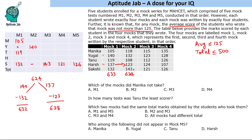We are not sure who among Yugal or Harsh does not write the first mock, so we take two cases. In Case 1, we assume Yugal is not appearing in Mock 1, so Harsh will appear. Yugal will appear in all remaining tests. Since Sakshi is not appearing in this test, Manika scores 118, the next person scores 108, and another scores 123.